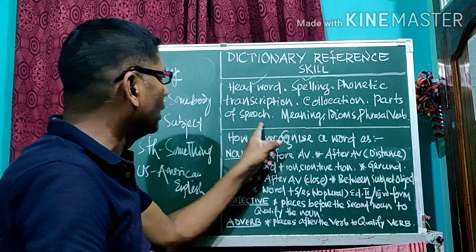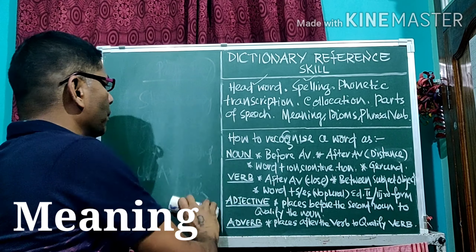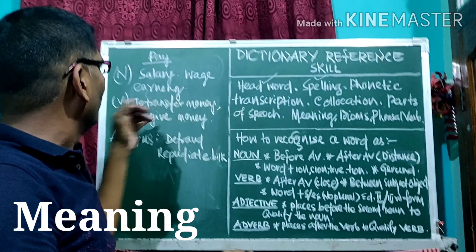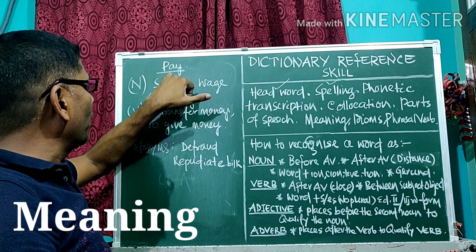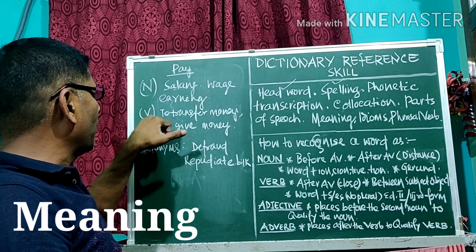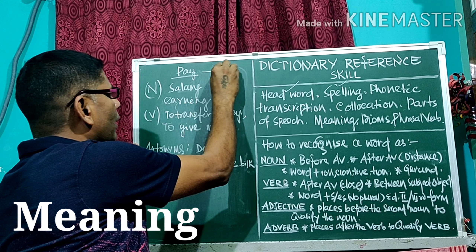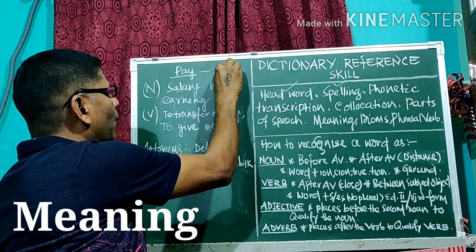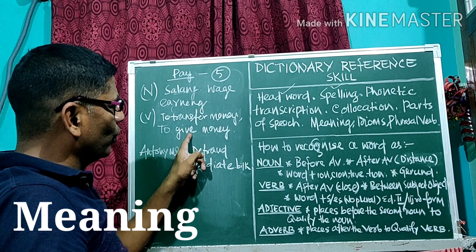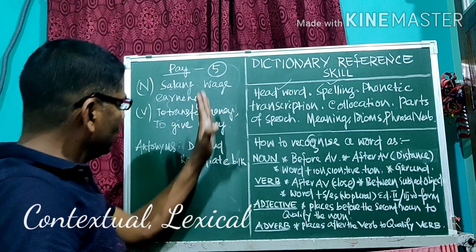Now I will give the meaning of the word 'pay'. After the parts of speech, we get the meaning. As a noun, 'pay' means salary, wage, earning — three meanings. As a verb, it means to transfer money, to give money — two meanings. So altogether there are five meanings.